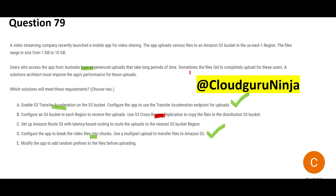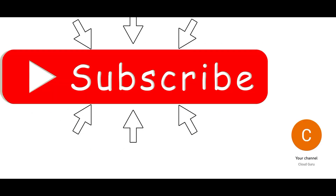Replication is not the answer — the upload itself is slow, and replication would mean configuring a bucket in each region to receive uploads, which is too much work. Latency-based routing is a read solution, not a write solution — and upload is a write operation. Modifying the app to add a prefix to files before uploading won't solve the problem either; prefixes are like subfolders, and moving to a subfolder won't make uploads faster. It's like saying your car should go to Pune instead of Mumbai — that doesn't make the car go faster. So the final answer is Transfer Acceleration and multipart upload.